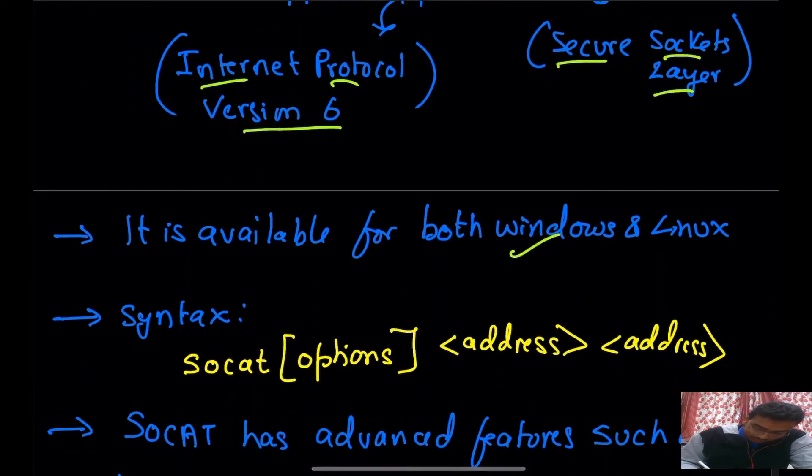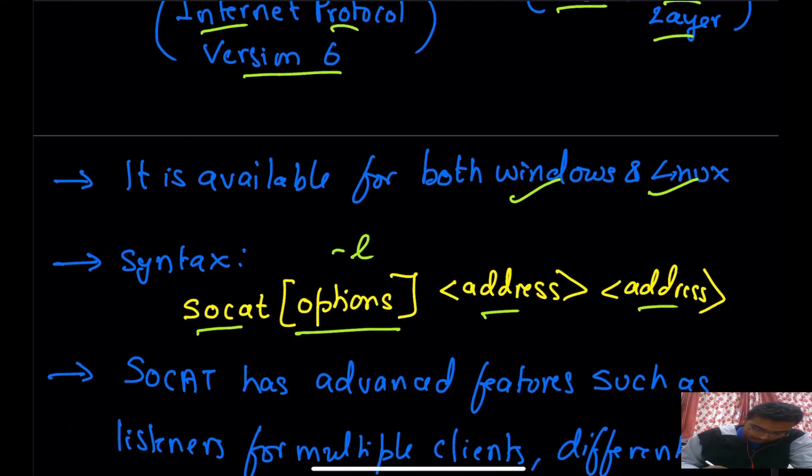It is available for both Windows and Linux. The syntax for SOCAT is: socat [options] <address> <address>. You can write options such as -l for listening, and address 1 and address 2, or first machine and second machine that you want to connect to.